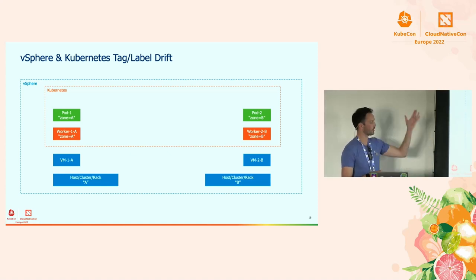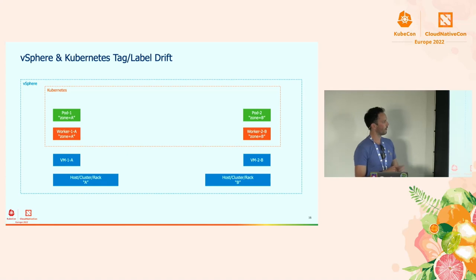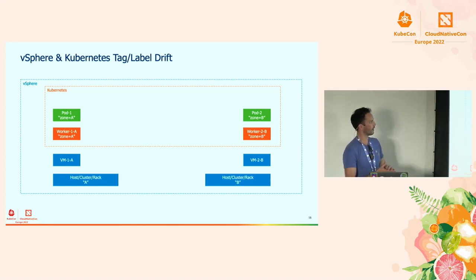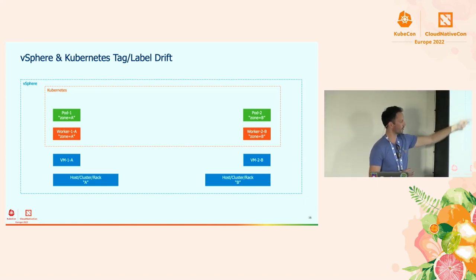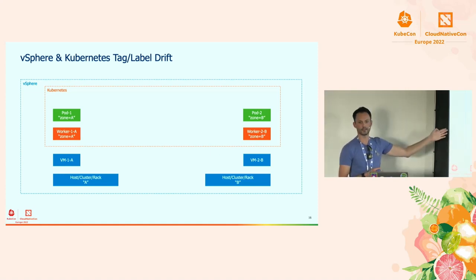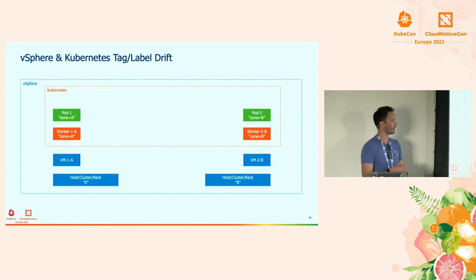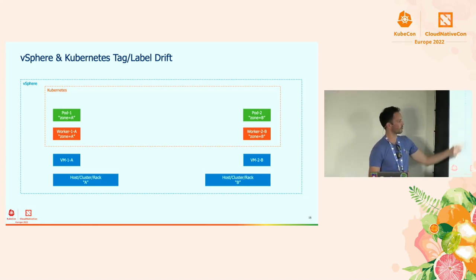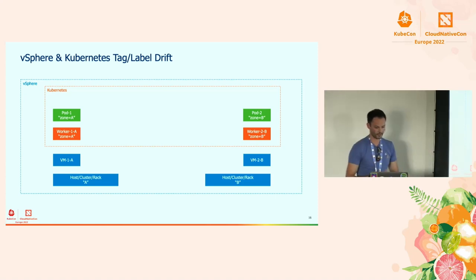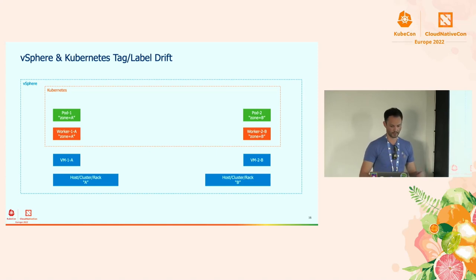Kubernetes itself has the same concept at a different layer — the Kubernetes scheduler is also aware of zones, affinity, and distribution of workloads, in this case pods, not VMs. If you do things right between those two layers, you get a direct mapping between a pod running on a Kubernetes worker, which maps to a VM, which maps to the same site or zone. This is important for stateful workloads.